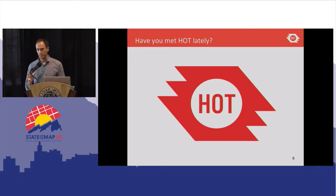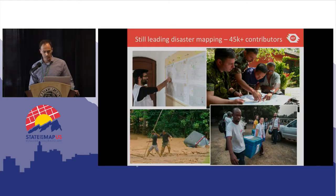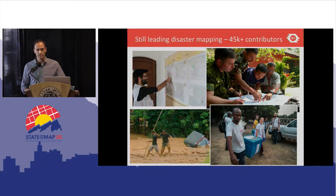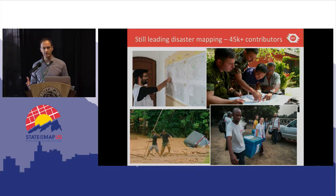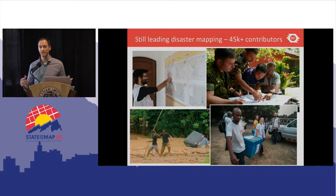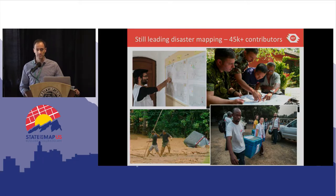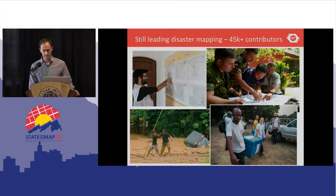I'm going to talk a little bit about what HOT is and what HOT's specific interest is in mapping campaigns. You might know us for our work around disaster mapping. Since the Haiti earthquake in 2011, we've been leading very large-scale disaster and crisis rapid response activations. We've had more than 45,000 contributors — many of you in the room — who've worked with us to rapidly respond to crisis on a rapid onset basis.